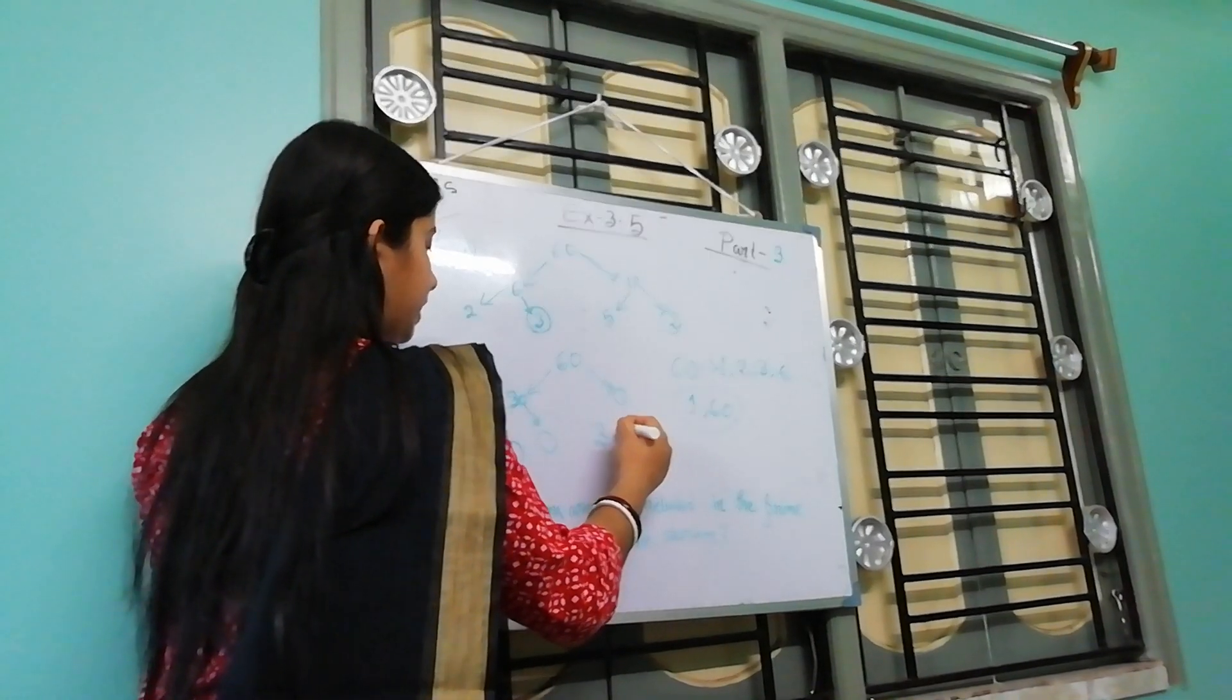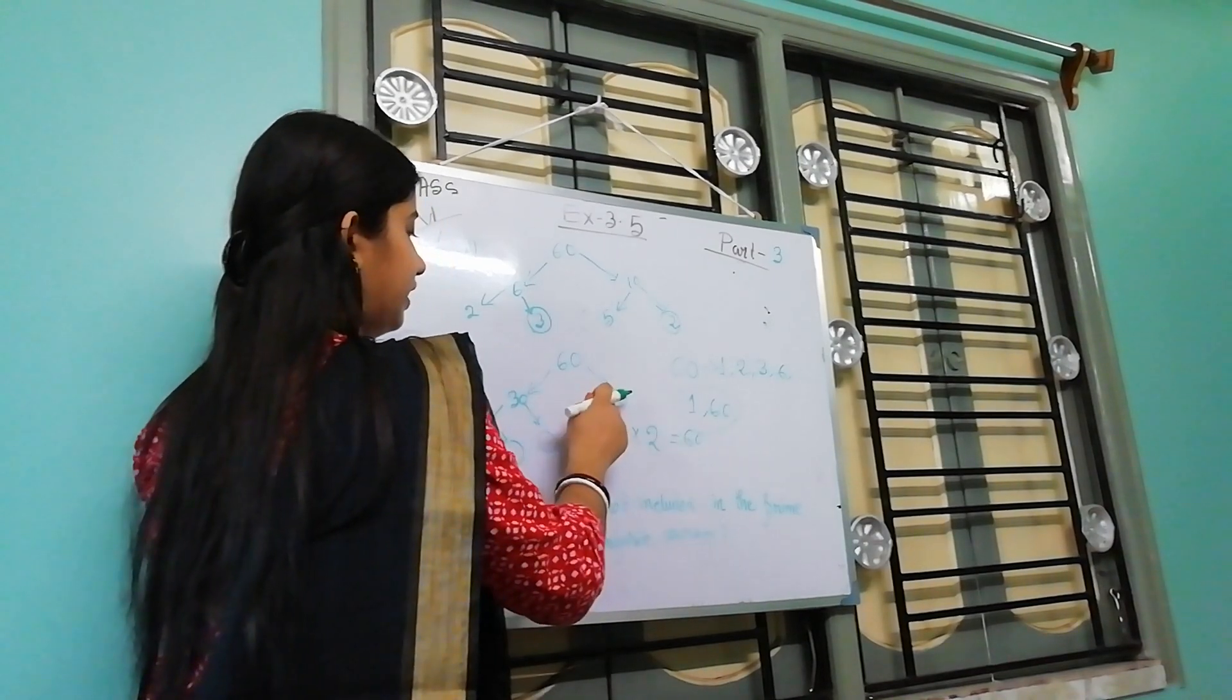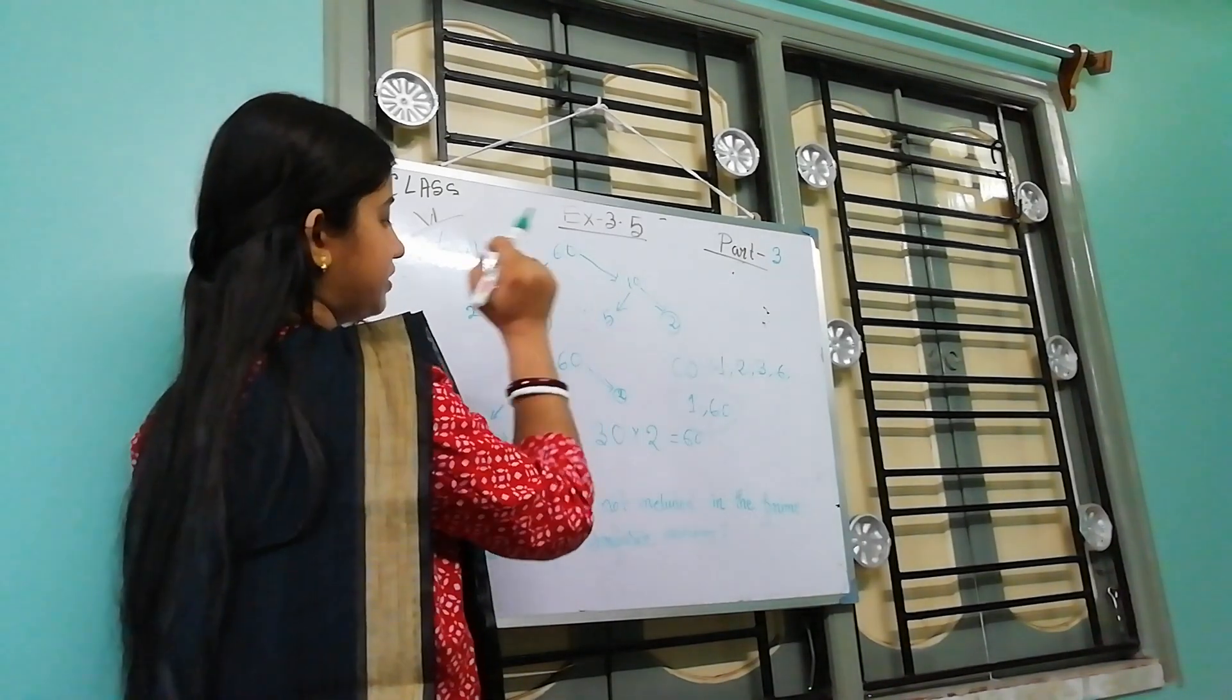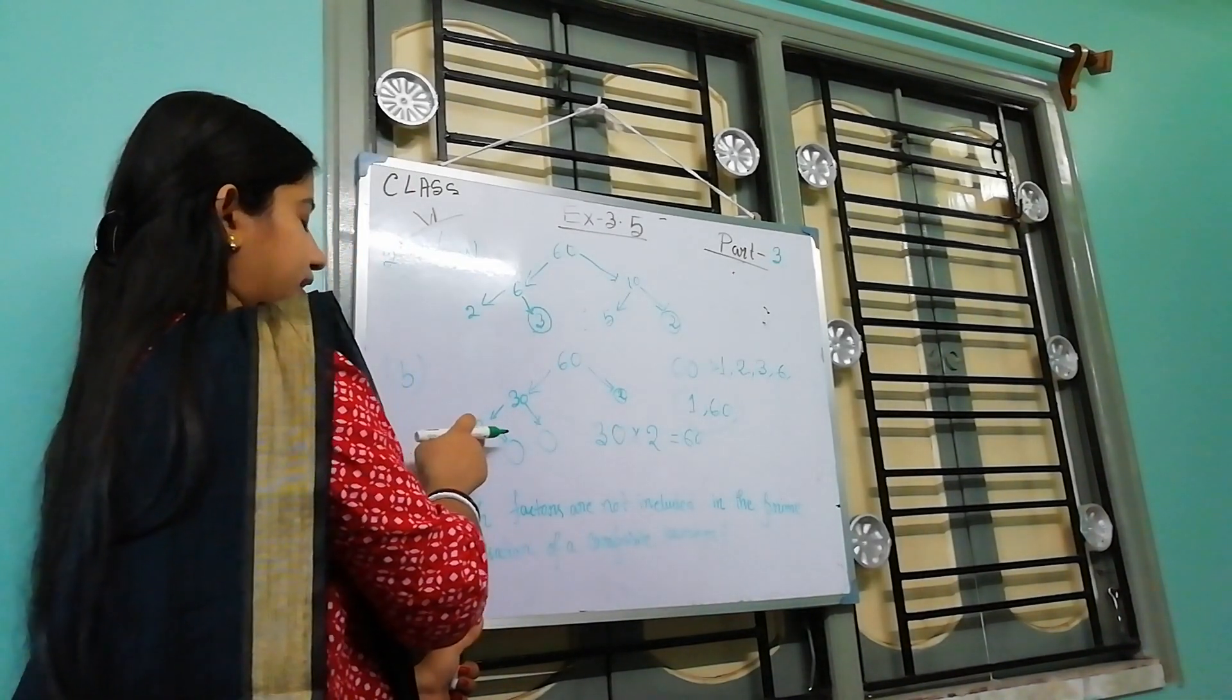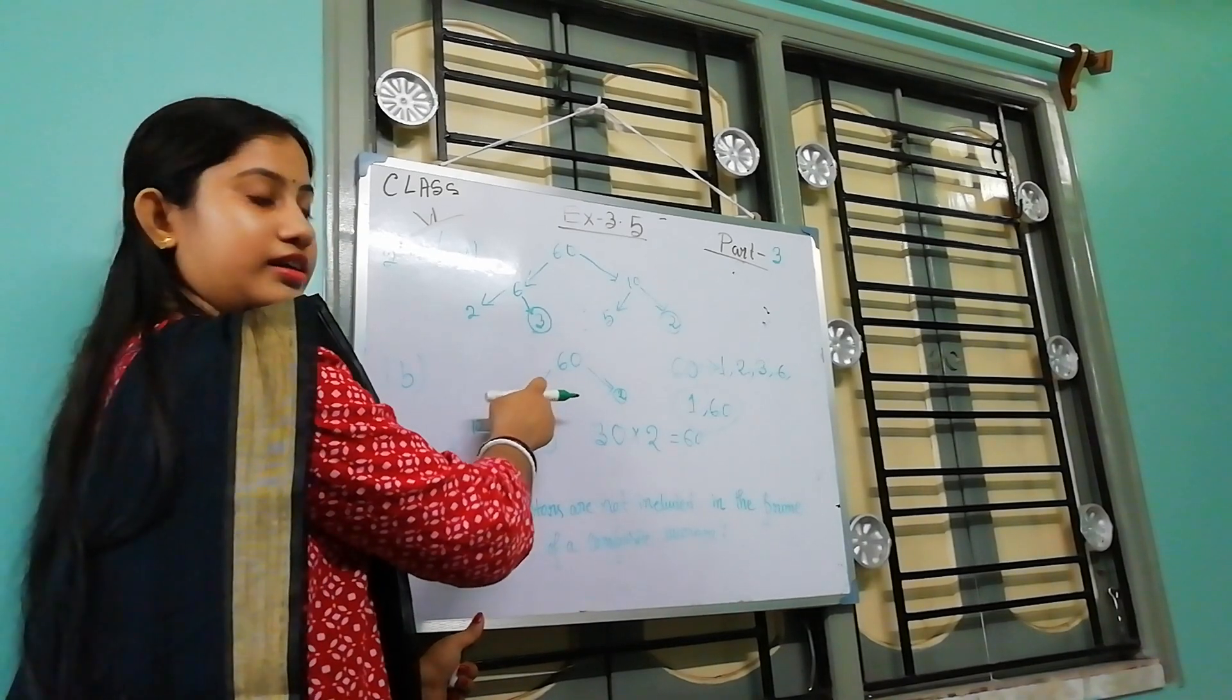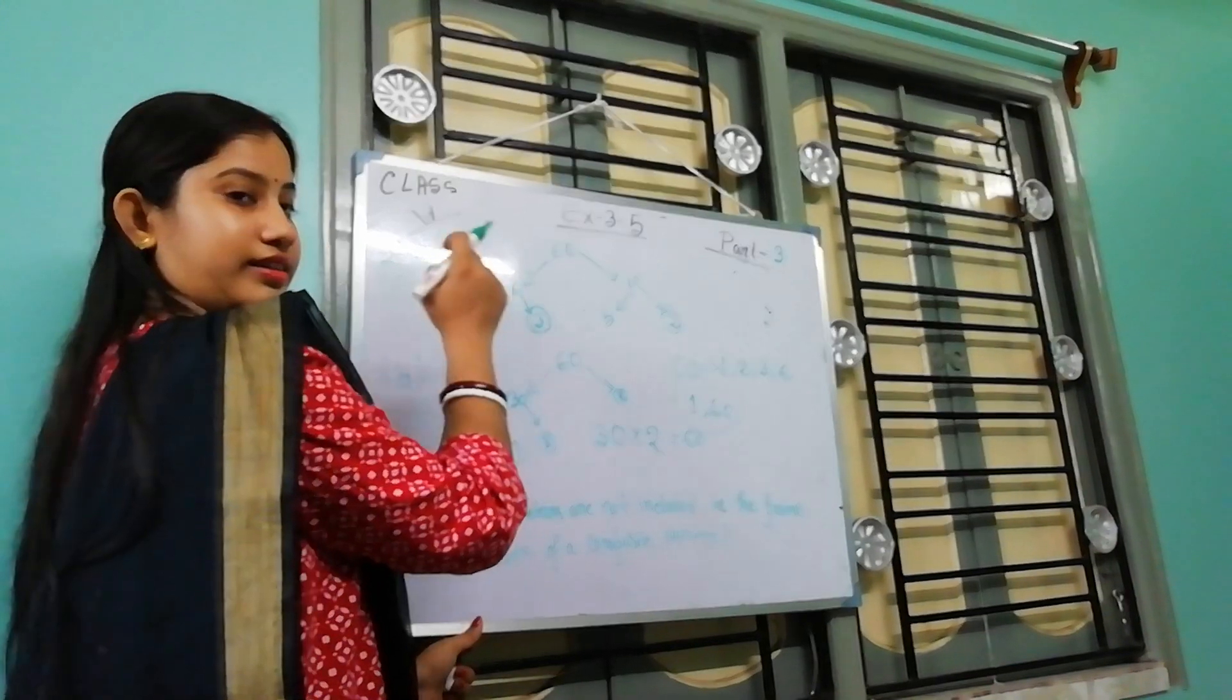If we multiply 30 by 2, then we get 60. So here this is 2, because 30 into 2, we get this portion, 60. And here 10. Now we multiply 3 with 10, then we get 30. This is 3, because 3 into 10 is 30.